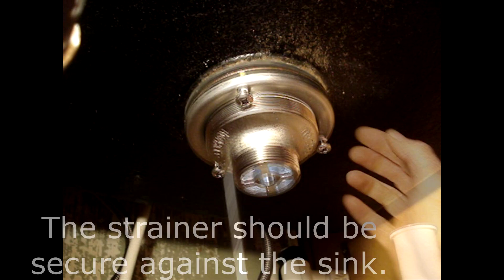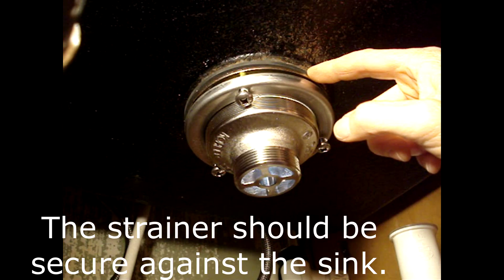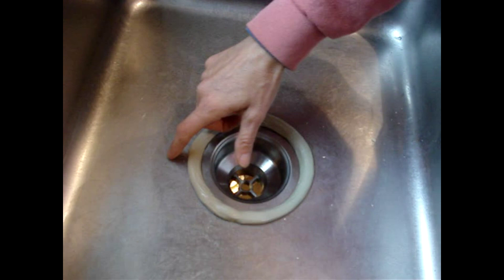You don't have to make these super tight. Turn them until you just start to feel a little more resistance, because all you need to do is compress the rubber gasket against the bottom of the sink and push out any extra putty between the sink and the strainer.